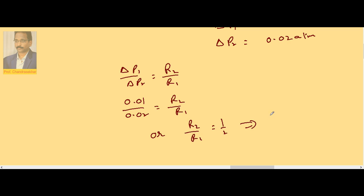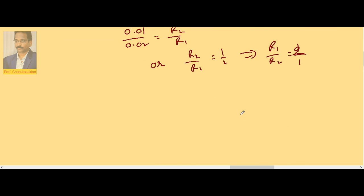This implies R1 by R2 is equal to 2 by 1. Now the question is volumes ratio. We know that V is equal to 4 third pi R cube.